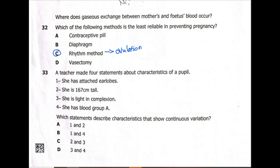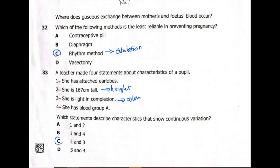Question 33: a teacher made four statements about a pupil's characteristics. One: she has attached earlobes. Two: she is 167 cm tall. Three: she is light in complexion. Four: she has blood group A. Which statements describe characteristics that show continuous variation? Height is part of continuous variation. Skin color, which is complexion, is also continuous variation. The answer is 2 and 3, which is C.